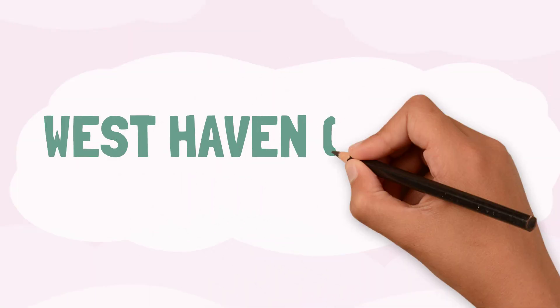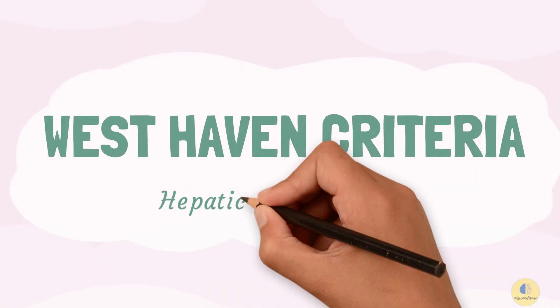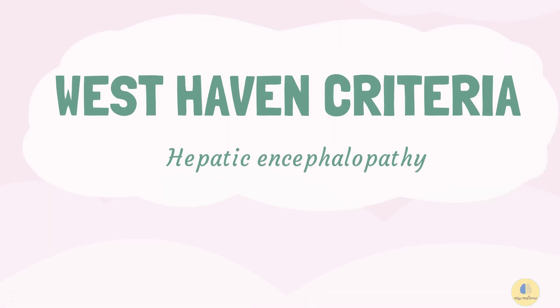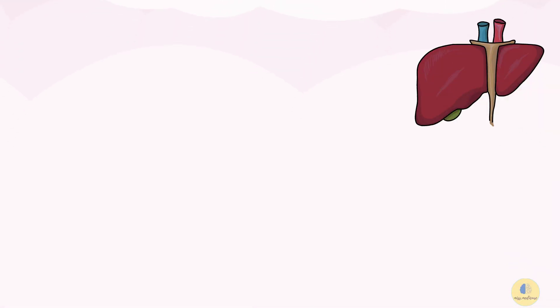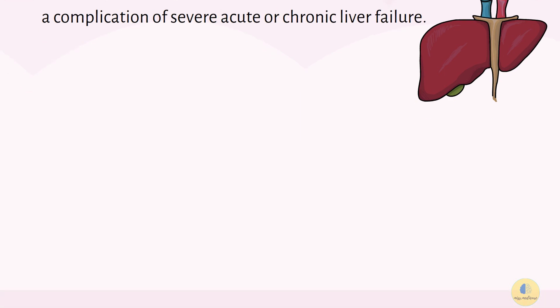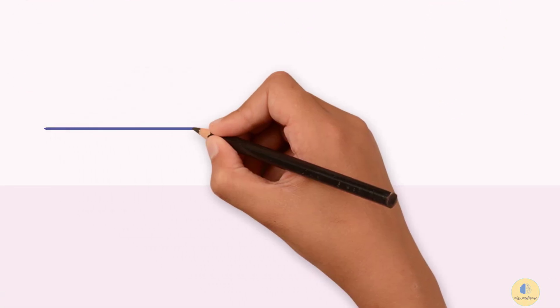The West Haven criteria is the most frequently used criterion for grading hepatic encephalopathy. Hepatic encephalopathy occurs as a complication of severe acute or chronic liver failure. It is characterized by alterations of personality, consciousness, cognition, and motor function.